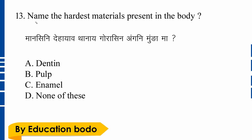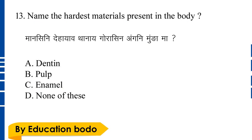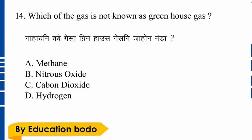Question number thirteen: Name the hardest material present in the body. Option C is the right answer — Tooth enamel is the hardest material in the human body.